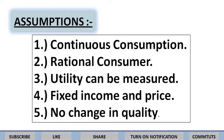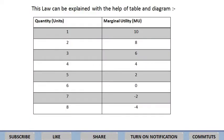अब इस law को हम समझेंगे with the help of table and diagram — यह table and diagram पहले वाले tutorial में भी detail में discuss किया था। Table में: quantity लिखो, फिर marginal utility। जब 1 unit consume करो तो MU = 10, जब 2 units तो MU = 8, जब 3 units तो MU = 6, जब 4 units तो MU = 4। इस तरह जितने ज़्यादा units consume करते जाओगे, marginal utility decrease होती जाएगी।